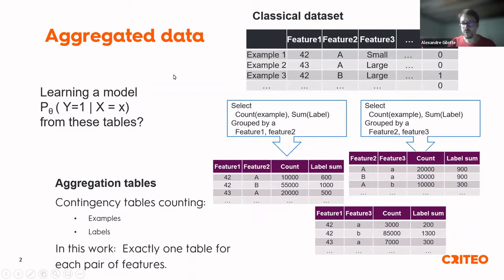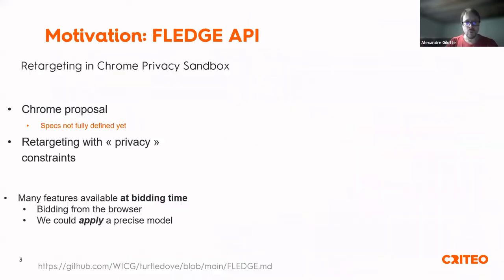In general, what I would call aggregated data is a set of contingency tables providing some counts of examples and sums of labels on several subsets of the features of the original dataset. In this work, I directed myself to the case where I have exactly one table for each pair of features. With 19 features, that means about 200 aggregation tables.